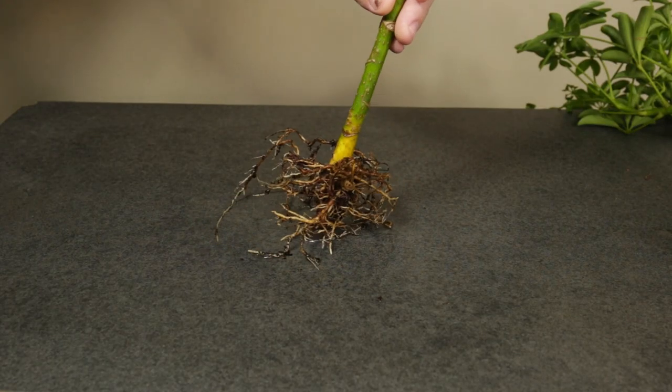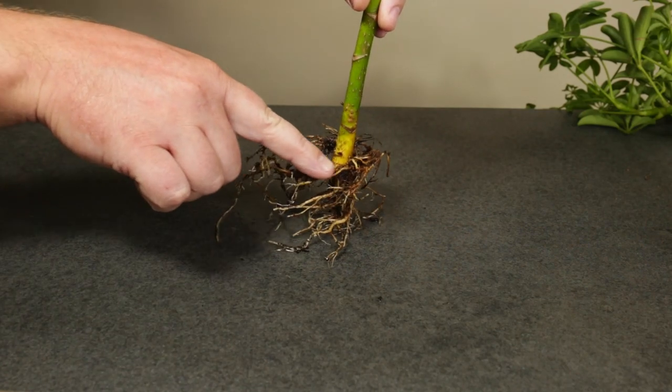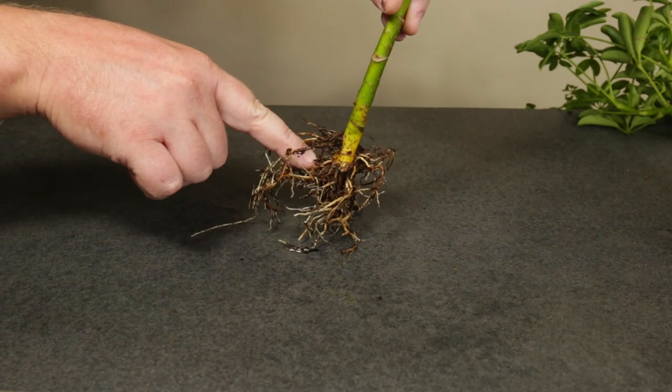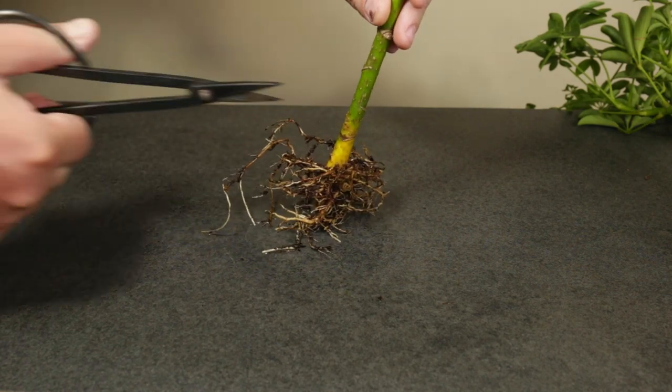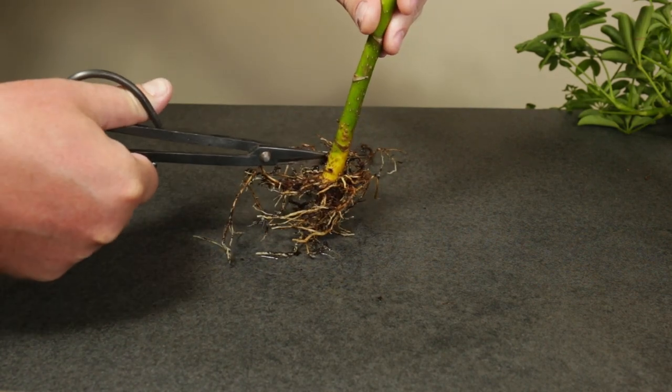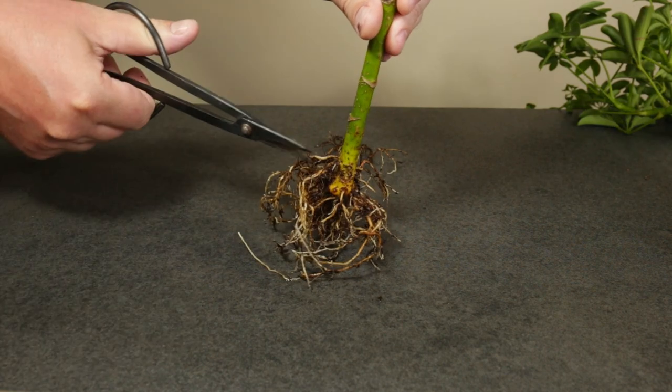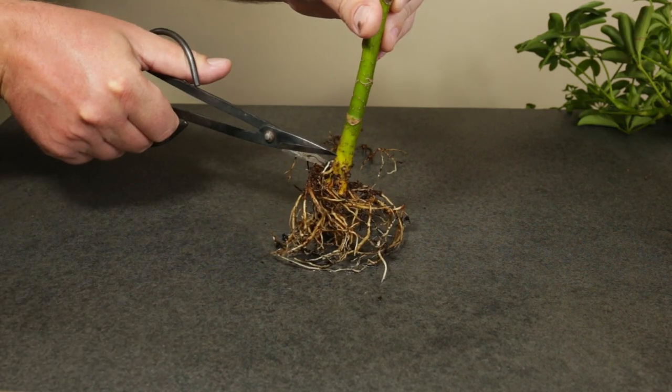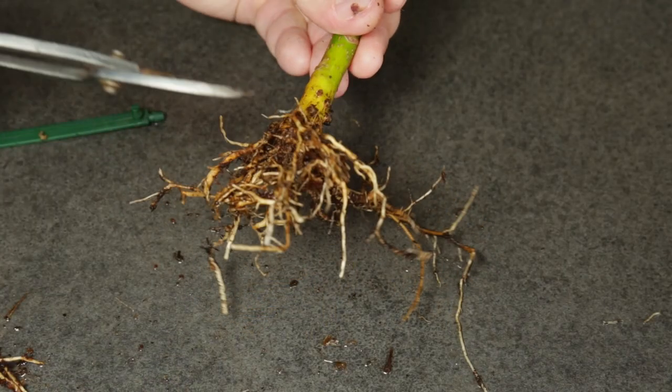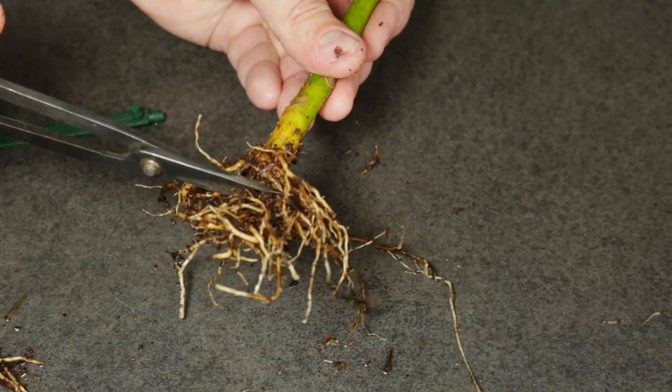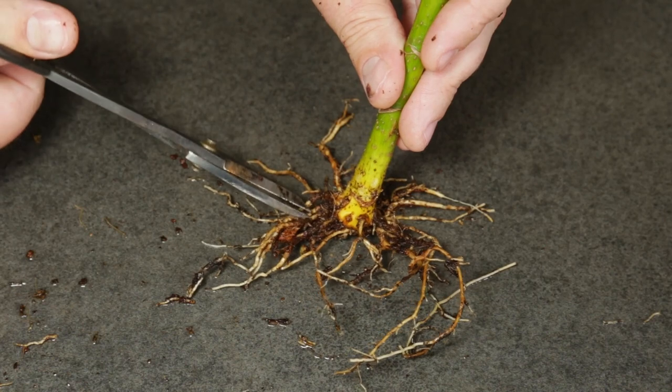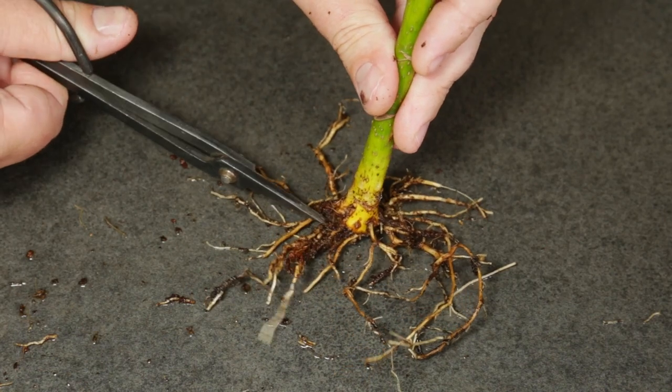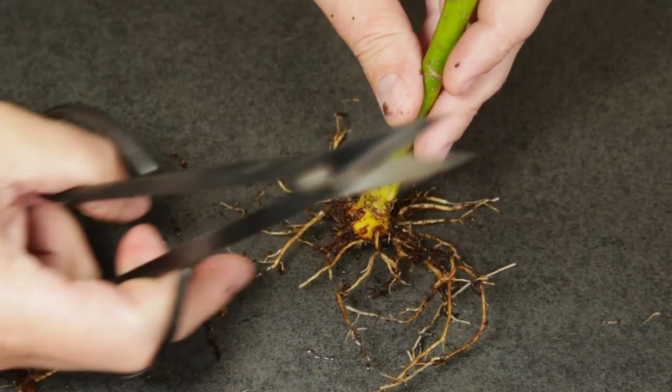Looking at the first Schefflera, the root plane will be somewhere around here, where the roots are growing around the trunk in a radial manner. So I'm going to remove all the roots growing above this point. Then I'm cutting all the roots growing below the selected root plane. And finally, I reduce the remaining roots back to a basic radial structure.